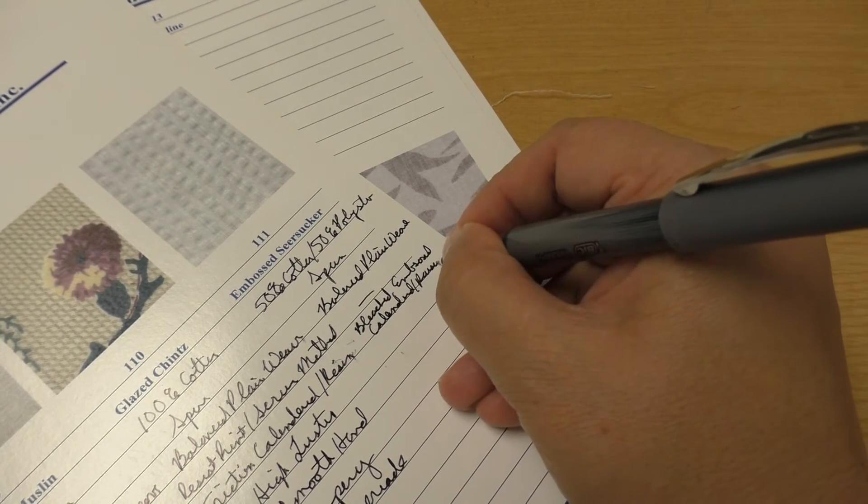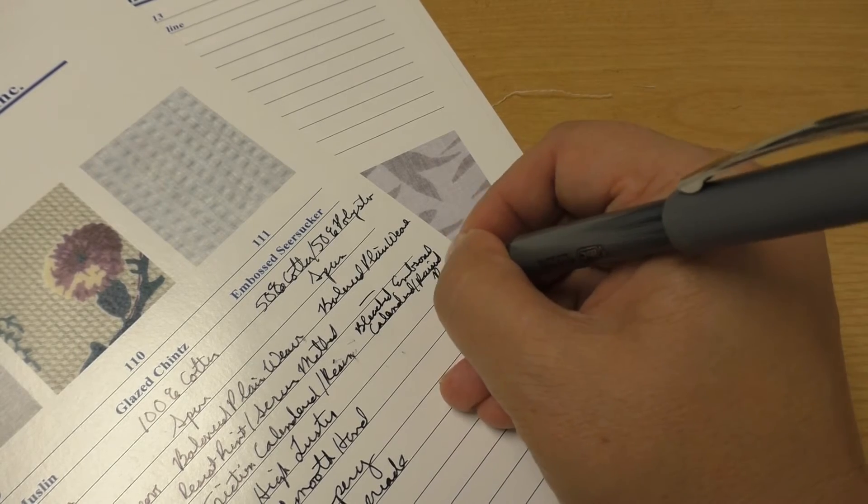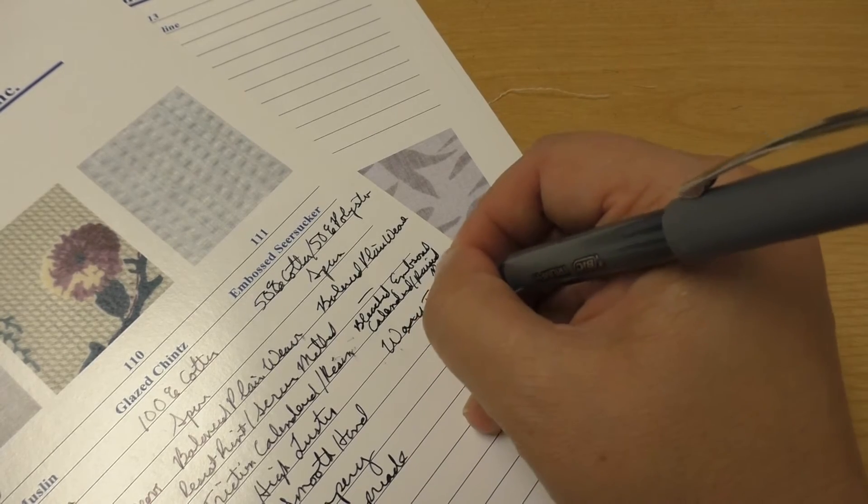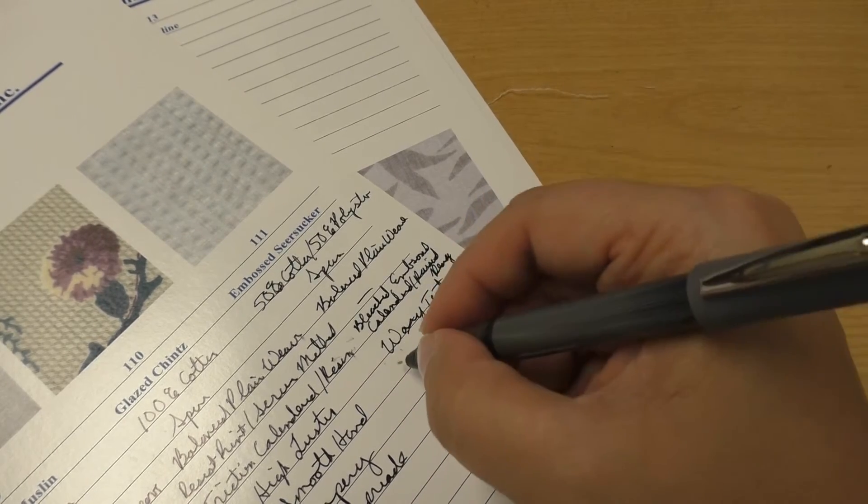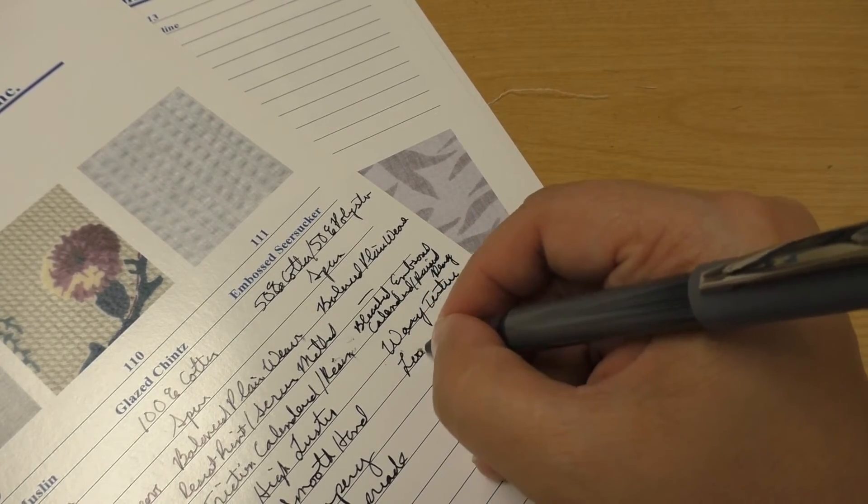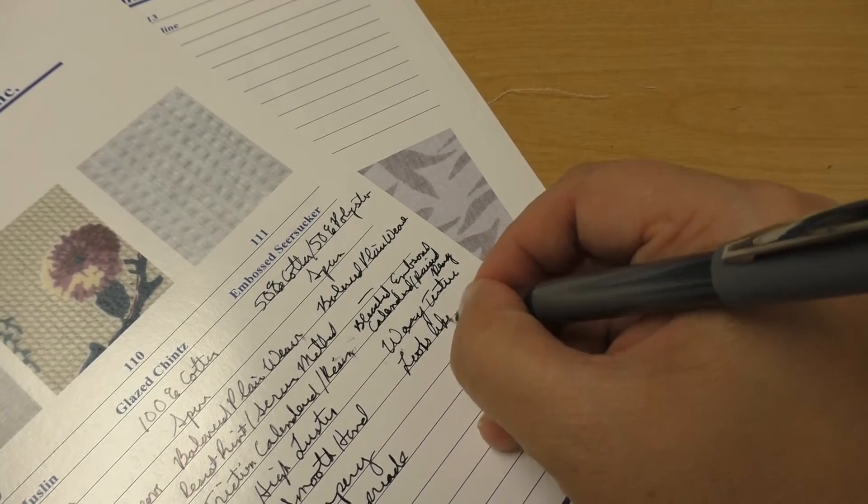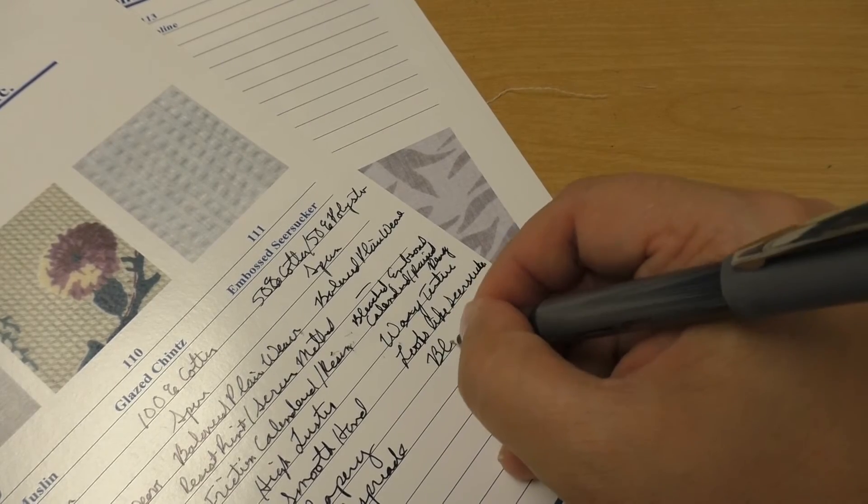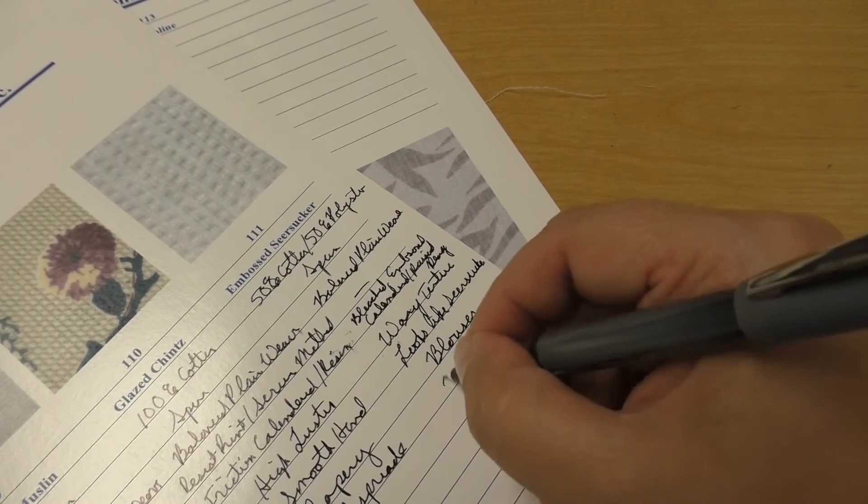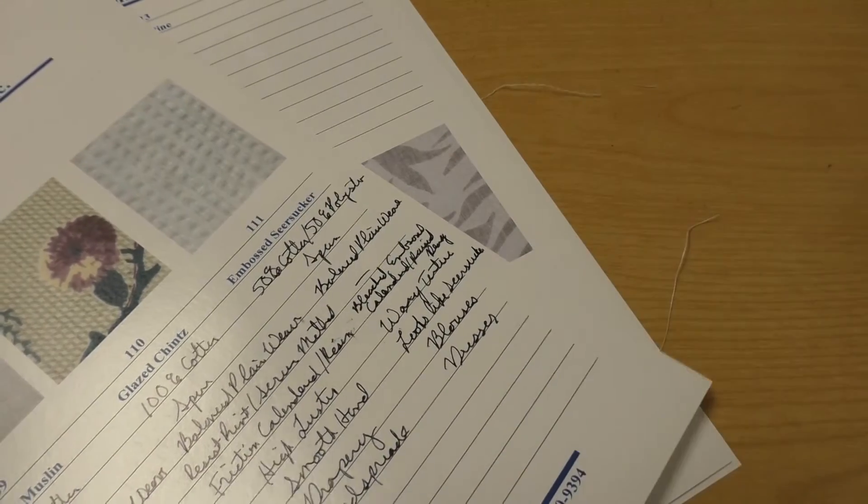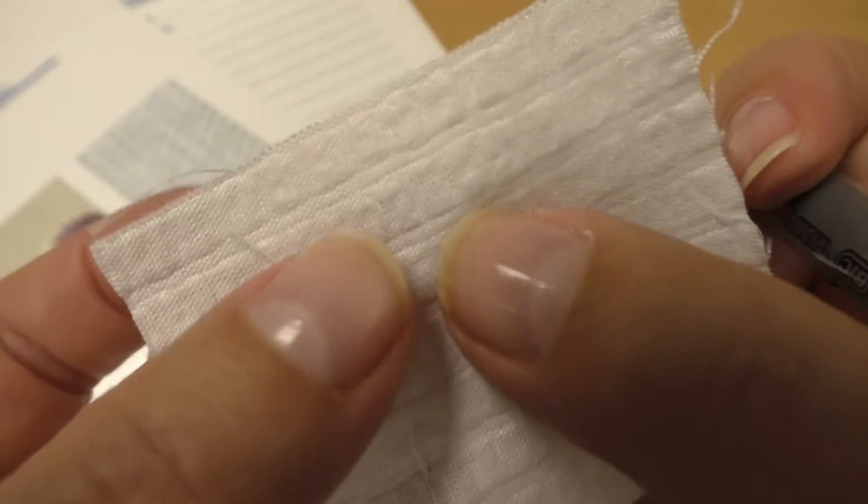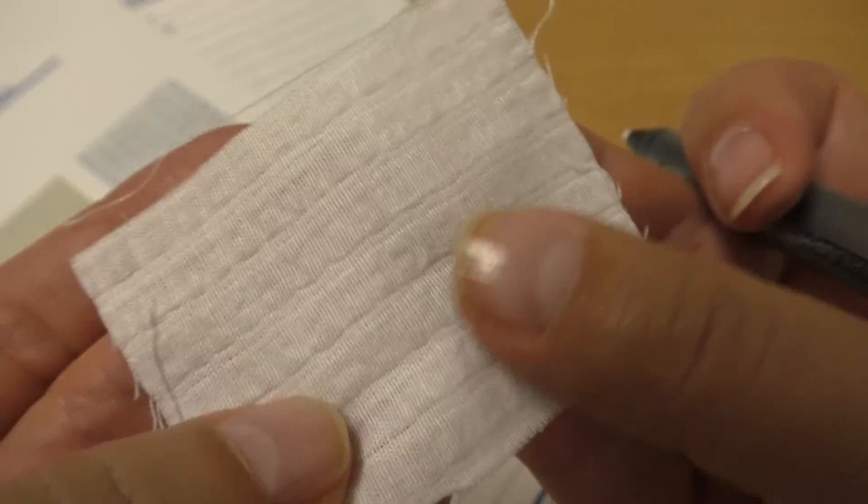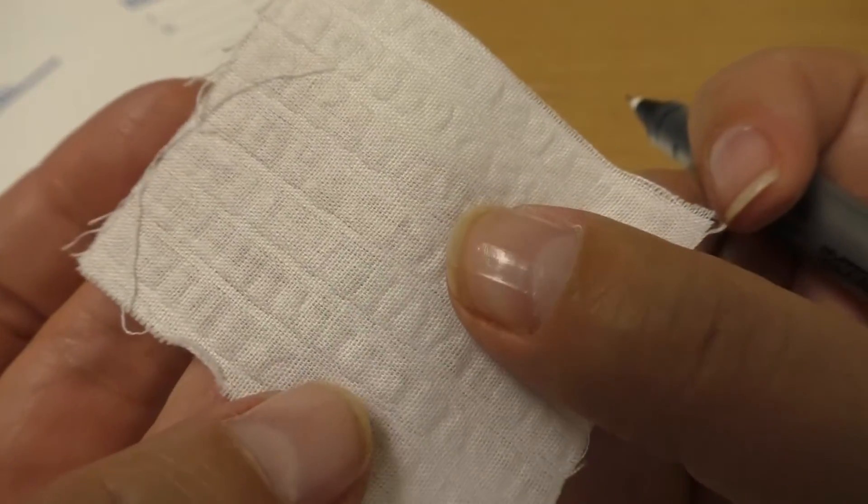It has a raised design. It does have somewhat of a waxy texture and it looks like, but is not, seersucker. Used for blouses and dresses, inexpensive blouses and dresses. So in fact, this design is just embossed on, and if I wanted to iron it, I could iron this design right out of the fabric.